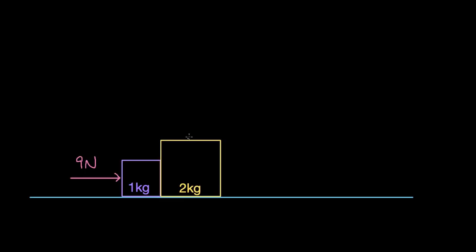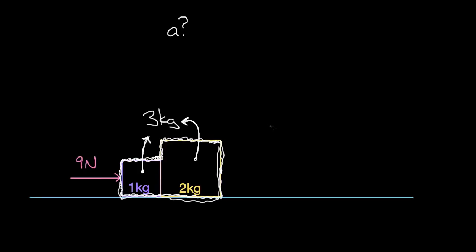Can we treat this system of boxes as if it were a single object? It's question dependent. If the question is what's the acceleration of these boxes as they slide to the right, they're going to move at the same rate — as you push the one kilogram box, it pushes the two kilogram box and they move together. Since they never become separated, the fact that there were two boxes doesn't matter. We can treat this system of two boxes as if it were a single three kilogram box.